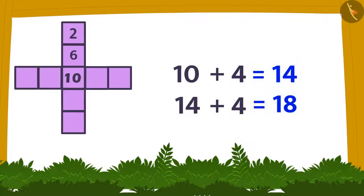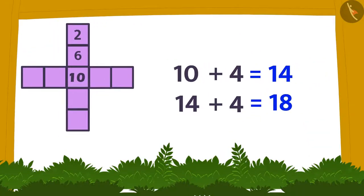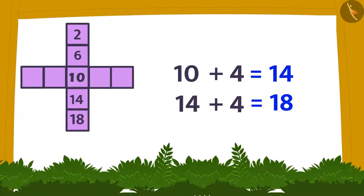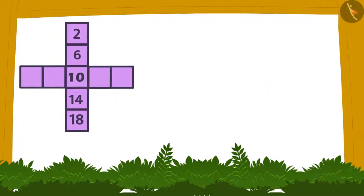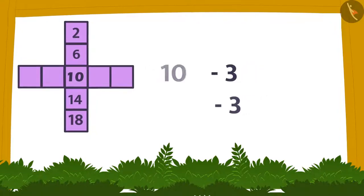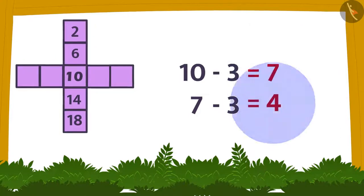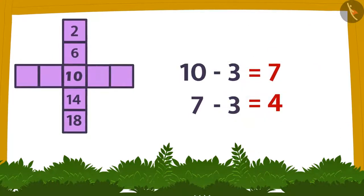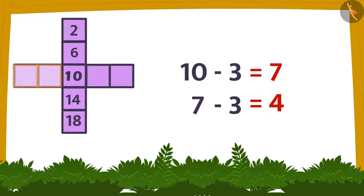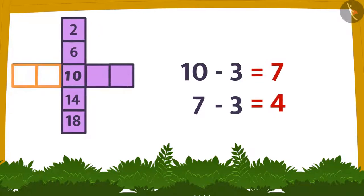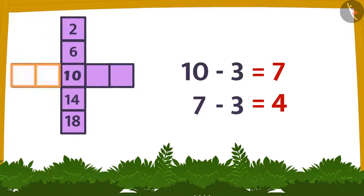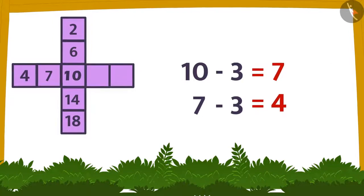These can be filled in two vertical cells below the central number like this. After this by successively subtracting 3 from 10 twice I get 7 and 4. These can be filled into two horizontal cells to the left of the central number like this.